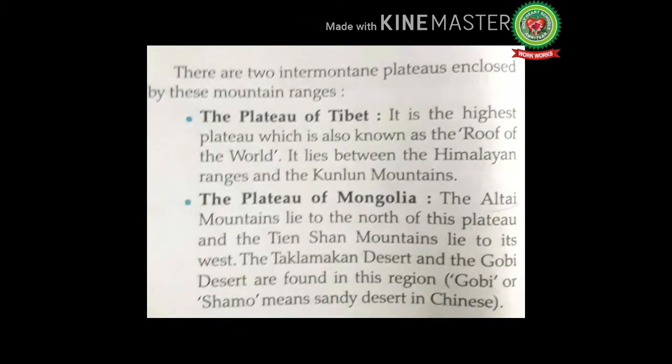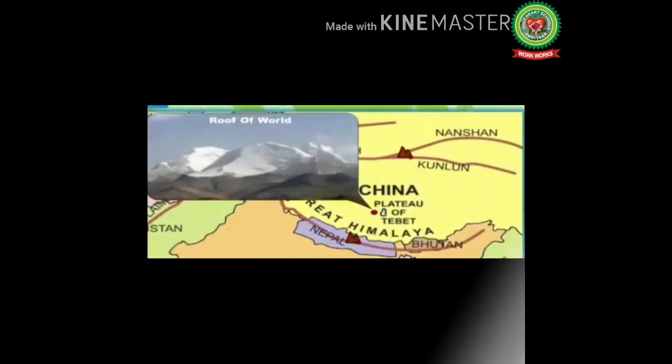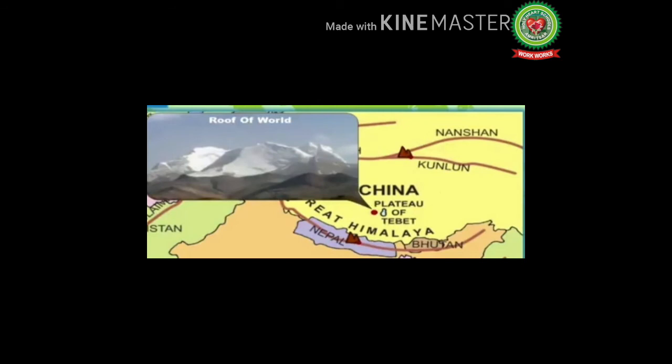There are two inter-mountain plateaus enclosed by these mountain ranges. The Plateau of Tibet is the highest plateau, also known as the 'roof of the world.' It lies between the Himalayan ranges and the Kunlun mountains. The area is called the roof of the world because it is about three miles above sea level and is surrounded by very tall mountains, including the two tallest in the world: Mount Everest and K2.